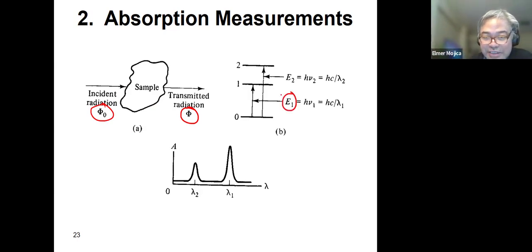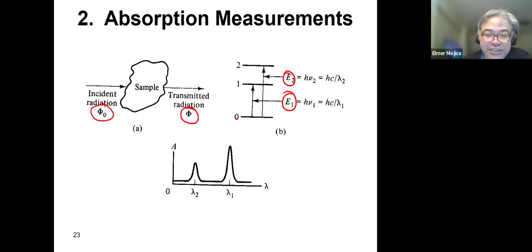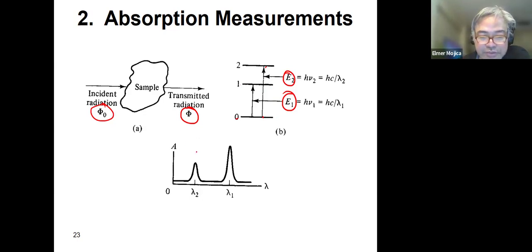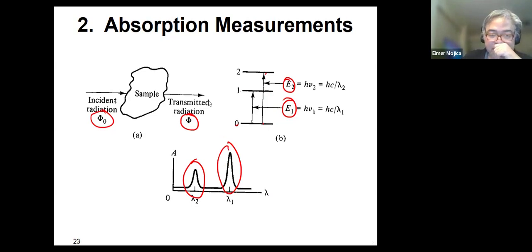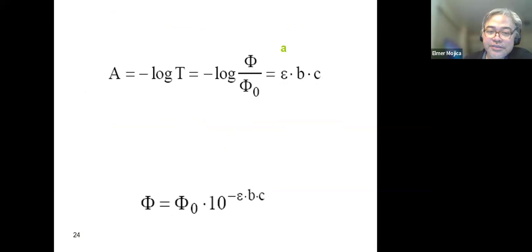The energy corresponds to absorption of light from one energy level to another. One transition gives you one peak and another transition gives another peak. The resulting spectrum is what you see in letter C.